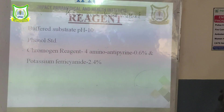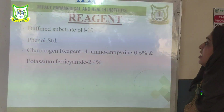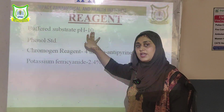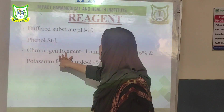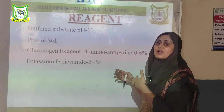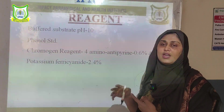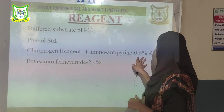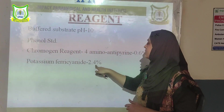The reagents required for the King and Kind method are: buffered substrate at pH 10, because the enzyme is active only in alkaline pH; standard phenol; a chromogen reagent — 4-amino antipyrin at 0.6%; and potassium ferricyanide at 2.4%, which helps drive the chromogen reaction.